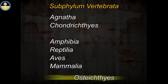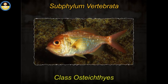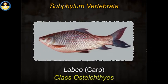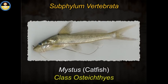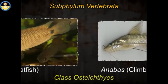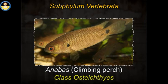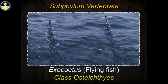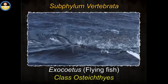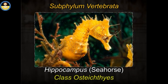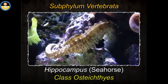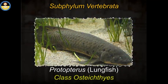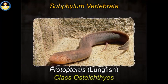Class Osteichthyes — comprises bony fishes. Some examples are Labeo (carp), Mystus (catfish), Anabas (climbing perch), Exocoetus (flying fish), Hippocampus (seahorse), and Protopterus (lungfish).